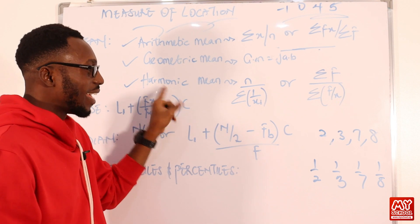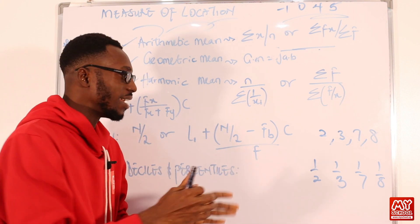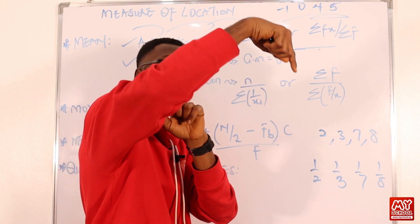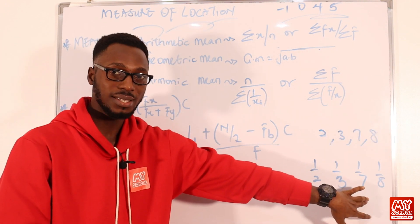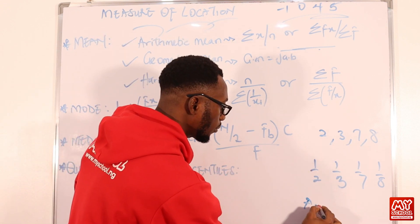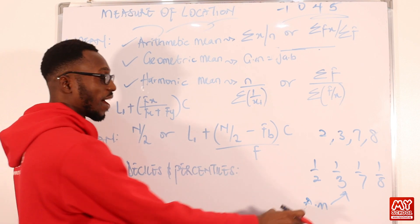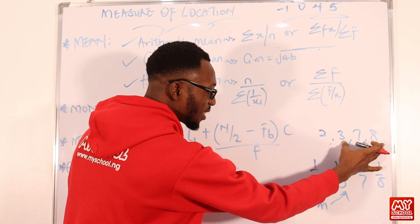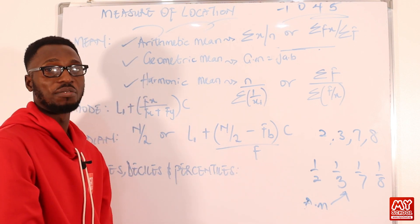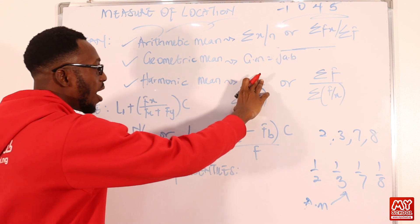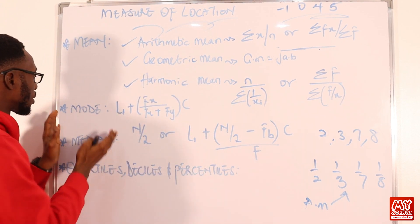The harmonic mean is the reciprocal of the arithmetic mean of the reciprocals. So: take your data, find the reciprocals, compute their arithmetic mean, then take the reciprocal of that result — that is your harmonic mean. This applies for both ungrouped and grouped data. Don't worry — we have prepared examples to further understand this concept.